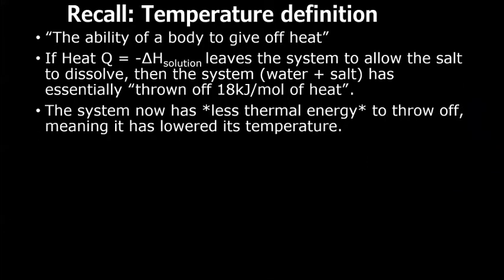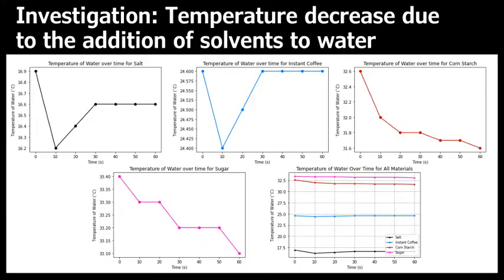We can picture this from our definition of temperature, the ability of a body to throw off heat. 18 kilojoules per mole flows out of the water as heat in order to permit the salt to dissolve. Hence, the system now has less thermal energy and has less of an ability to throw off heat, meaning it has lowered its temperature in this dissolution process.